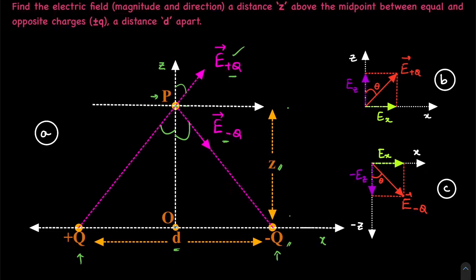How do we do that? Let's make a few more basic housekeeping things clear. Let's say the separation between charge q and point P is r — it's going to be the same on both sides. Now because this is a right angle triangle and because these two sides are the same, the angle is going to be the same here too. Let's call these theta.